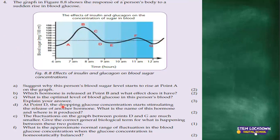Part D: at point D, the dropping glucose concentration starts stimulating the release of another hormone. At point D, the decrease is below the optimal level of 90 — it's now below 90. The hormone kicked in to ensure blood glucose returns to normal is glucagon. Glucagon will be released, and it is secreted and produced in the pancreas.